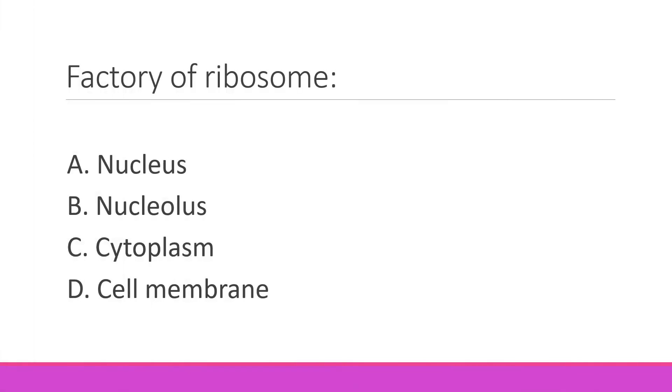The factory of ribosomes is beta — nucleolus. And the ribosome itself is the factory of protein.